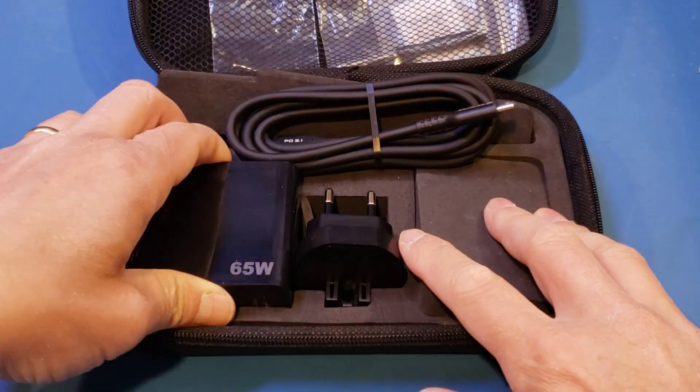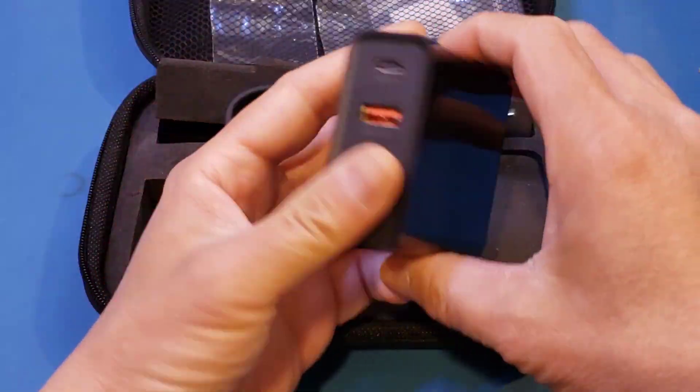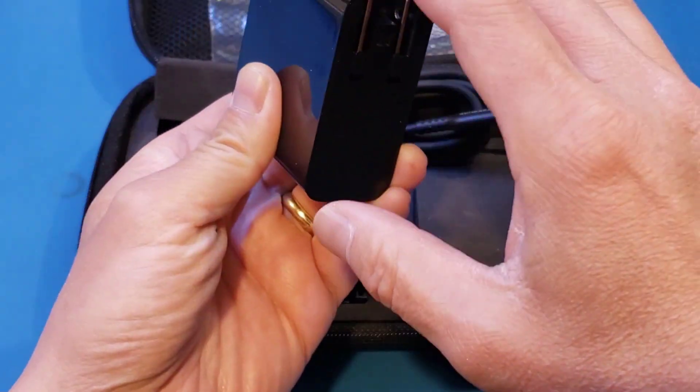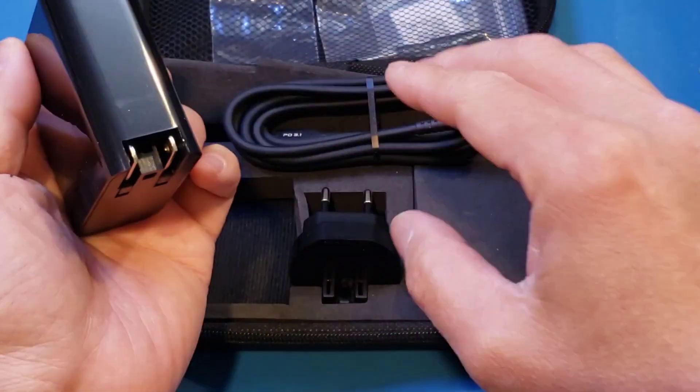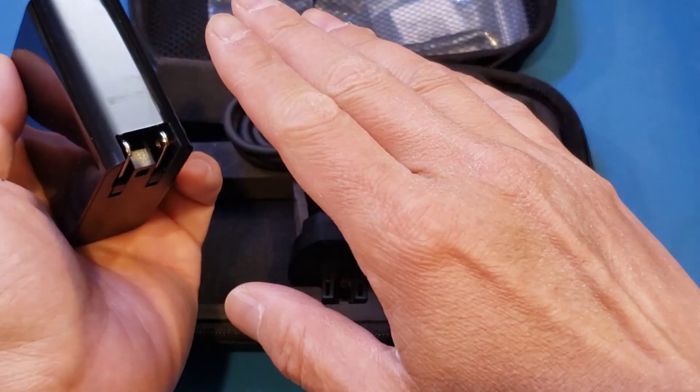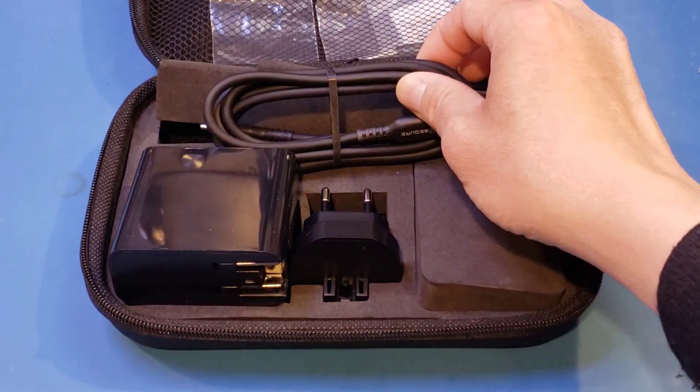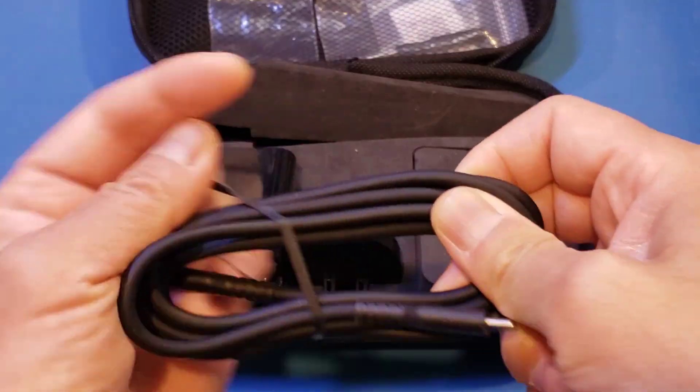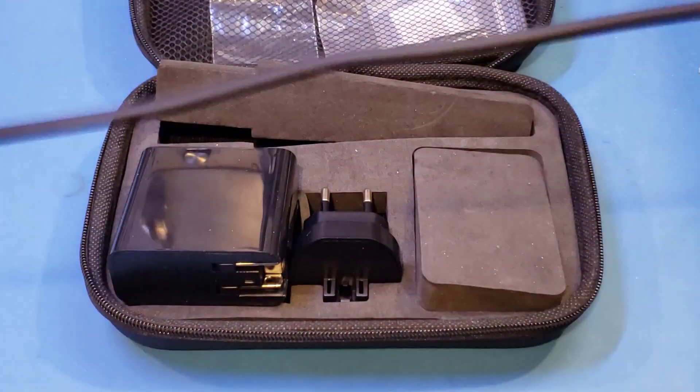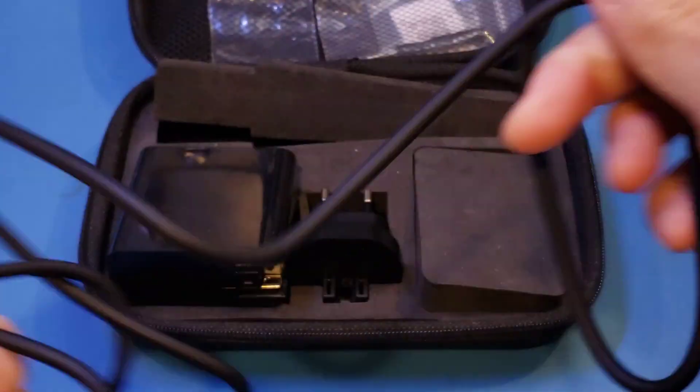Inside the case, you have a 65W power adapter. The power adapter itself is very nice, you can see that it has two outputs, and also it has this foldable plug, and you can see that it can plug into an adapter for other countries. It also supplies you with a PD3.1 USB-C cable. You can see that the cable itself feels very nice and it's soft. It definitely feels like a high quality cable.